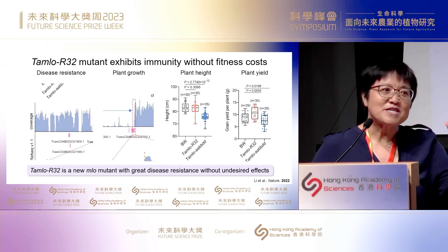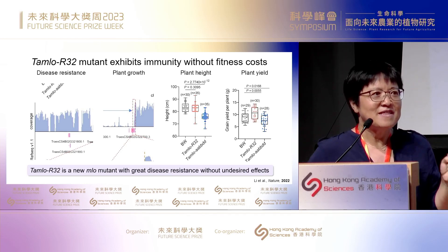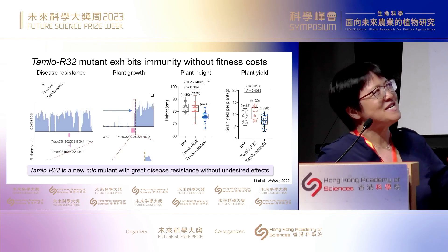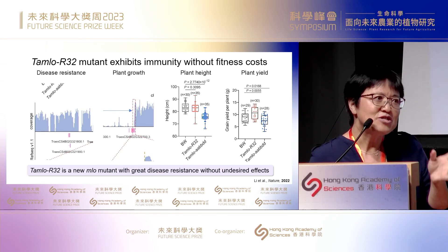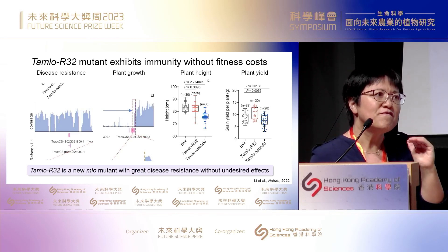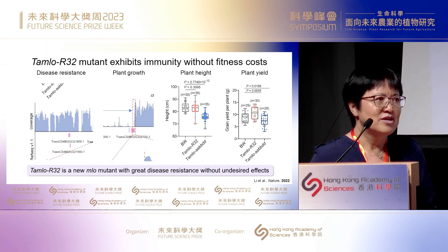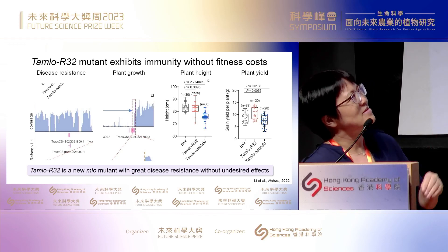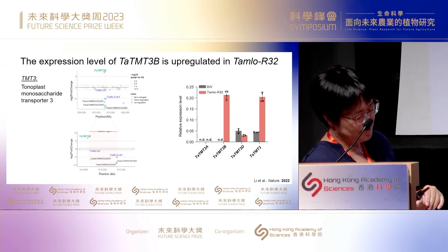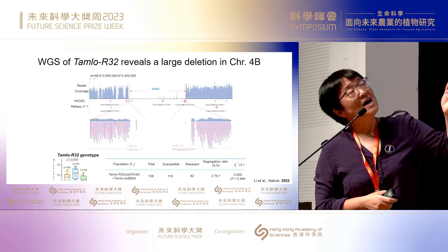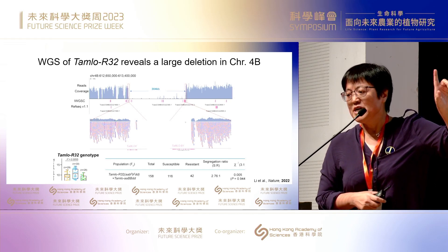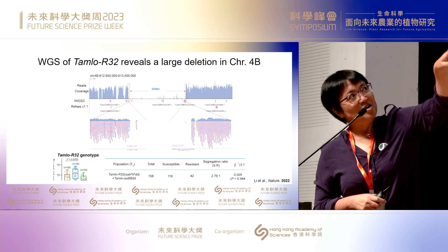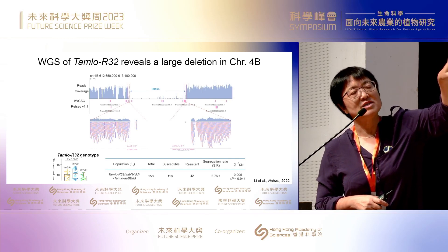When we grew this triple mutant in the field, we noticed it showed some decreased yield. While producing additional MLO mutants, we identified an interesting mutant called R32. R32 showed very normal plant height and enhanced yield. Since 2014, we spent nearly 8 years uncovering the biological basis behind this phenotype. We found that in R32, there existed a 304 kilobase pair large deletion, bordered by MLO-B1 and a newly identified homolog of MLO, which we call MLOX.